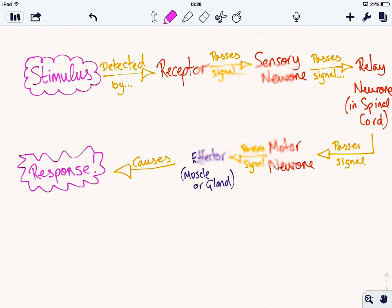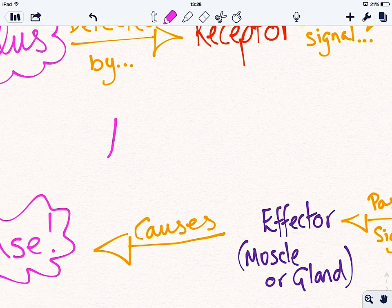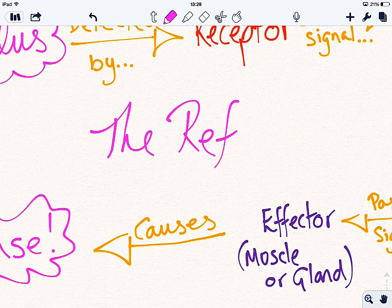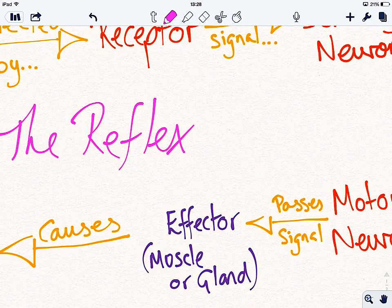So all of this is designed to be really quick, to involve as fewer neurons as possible, and to protect the body from harm as much as you can. So that's your reflex arc. The reflex arc.